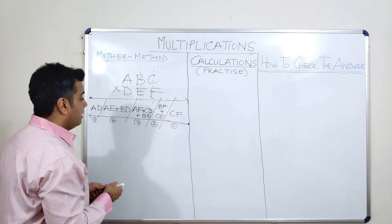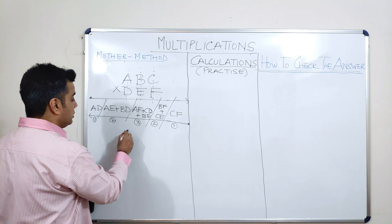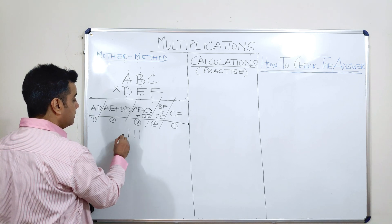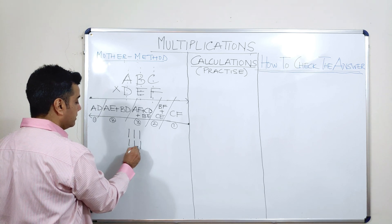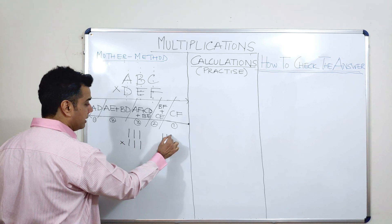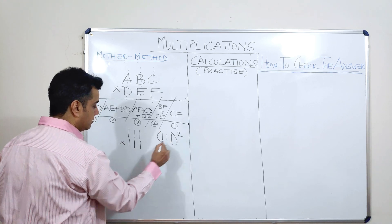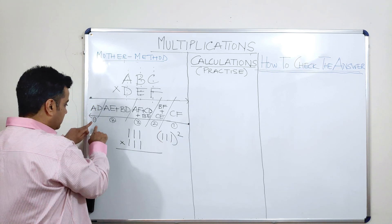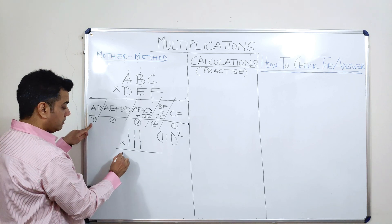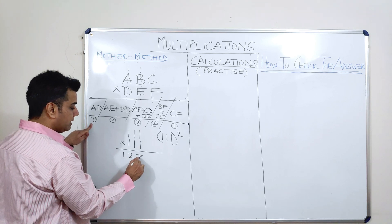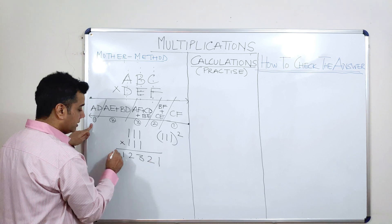Please relate. If I would have given you a question like 111 into 111, which is just like saying a triple 1 whole square, what is the answer for this? The answer is already written here. 1 followed by a 2 followed by a 3 followed by a 2 followed by a 1.